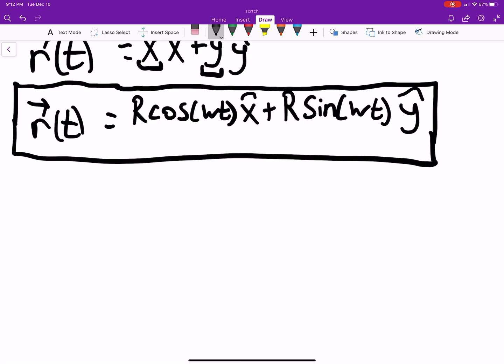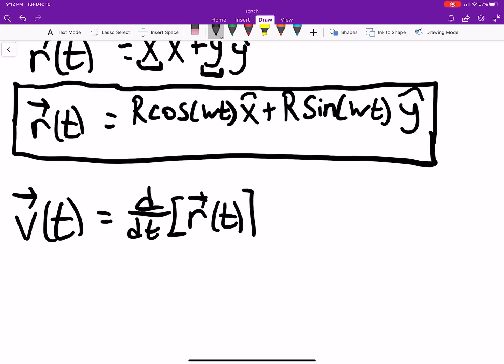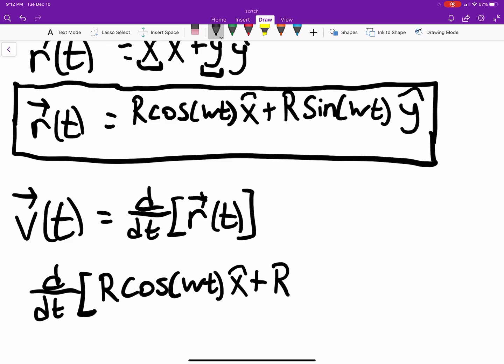If you want to know the velocity, that's just the derivative with respect to time of r of t. So we just need to take the derivative with respect to time of r cosine omega t x hat plus r sine omega t y hat.